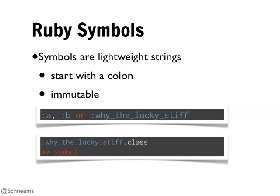Something else you will definitely see and utilize are symbols. If you're familiar with other programming languages, symbols are essentially immutable strings. They look exactly like a string, and you can even spell out words or sentences as long as you don't have any kind of breaks - for example, :a, :b, or :y_the_lucky_stiff. The reason it's an immutable string is as soon as it changes, it becomes a completely different symbol. Calling .class on a symbol returns 'Symbol.'